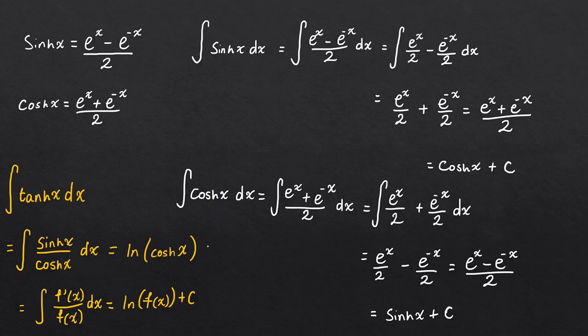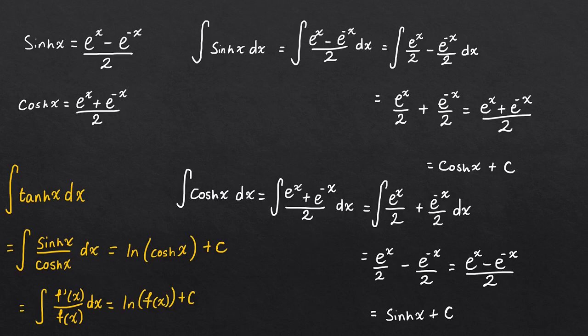So the integral of tanh x is the natural logarithm of cosh x, plus c. As you can see, the results are rather straightforward and you actually get the same results as with differentiation — if you differentiate sinh x you get cosh x, and if you differentiate cosh x you get sinh x. You might find that easier to remember. Hopefully that's helped show how we derive these results. Any issues, just leave a comment below — cheers.